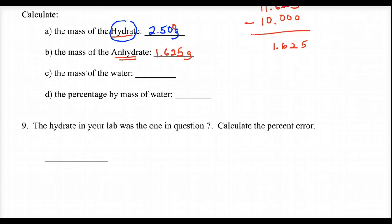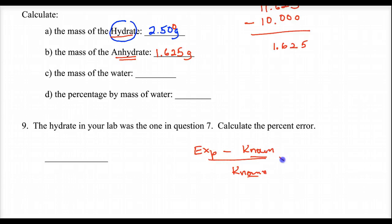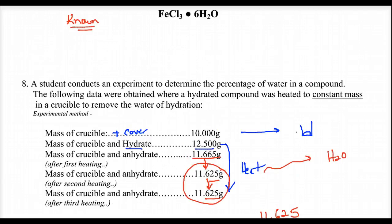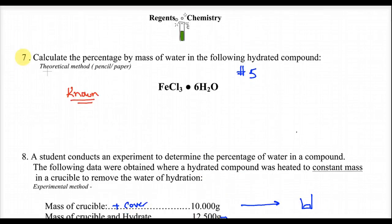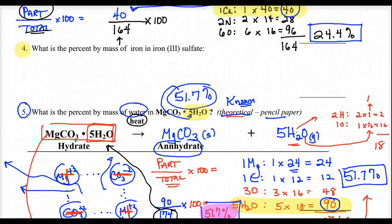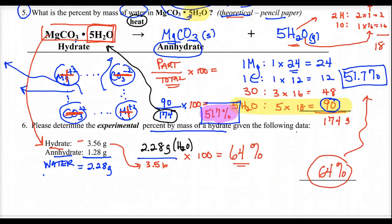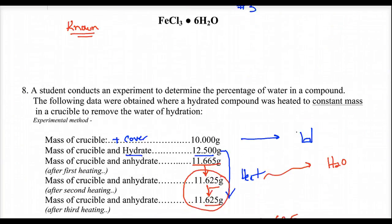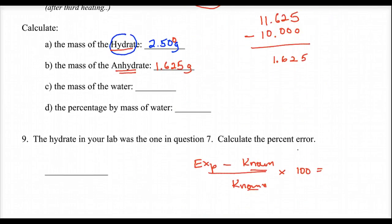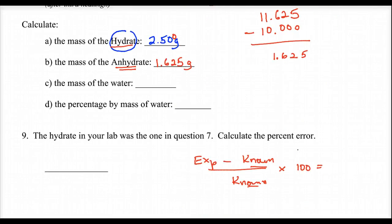The percent error is the experimental value minus the known, all over the known. The known — called theoretical — comes from the pencil and paper calculation. For classwork right now, complete numbers two, four, seven, eight, and nine. A key will be posted for you to check your answers.